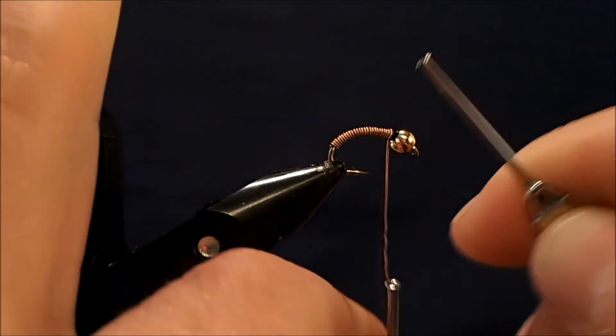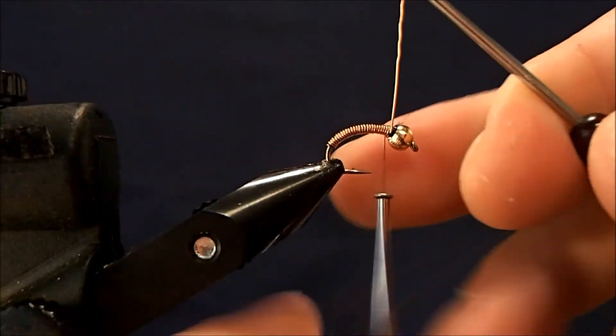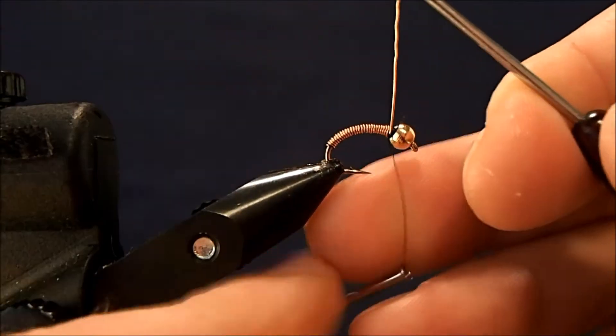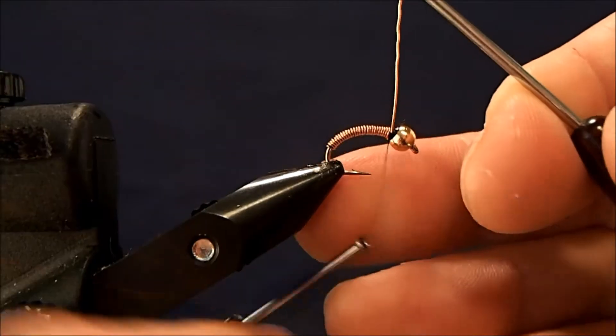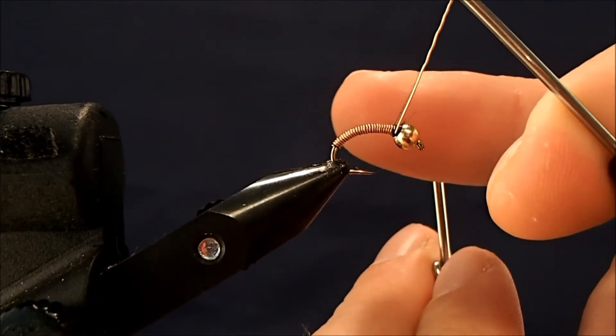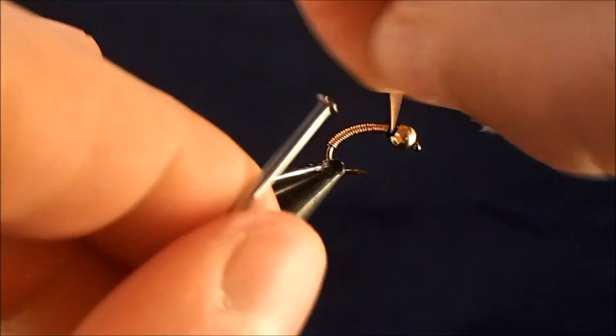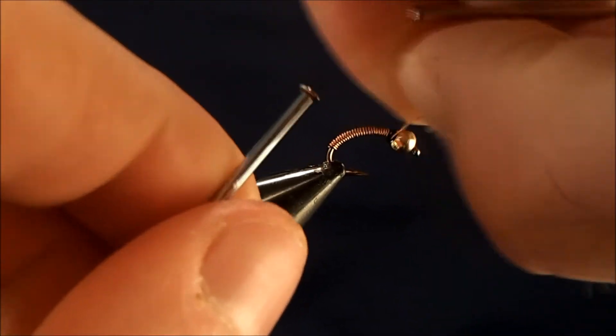Break that off again, then I can hold my bobbin up and my wire and start to make a couple of tight wraps to get that secure. When I'm comfortable with it, hold everything tight and just helicopter that off.